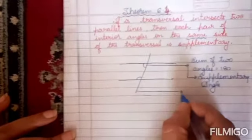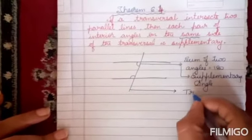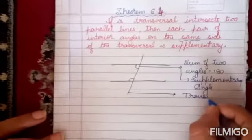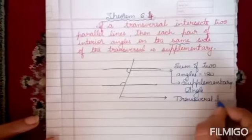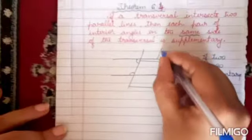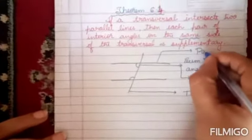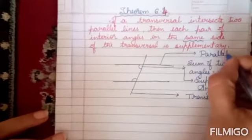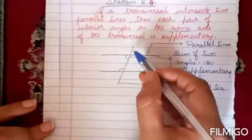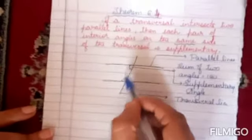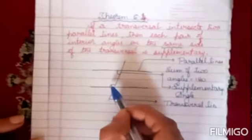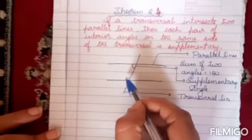And what is this line called? Transversal line. What about these two lines? Parallel lines. According to this theorem, if a transversal intersects two parallel lines, then each pair of interior angles are supplementary.